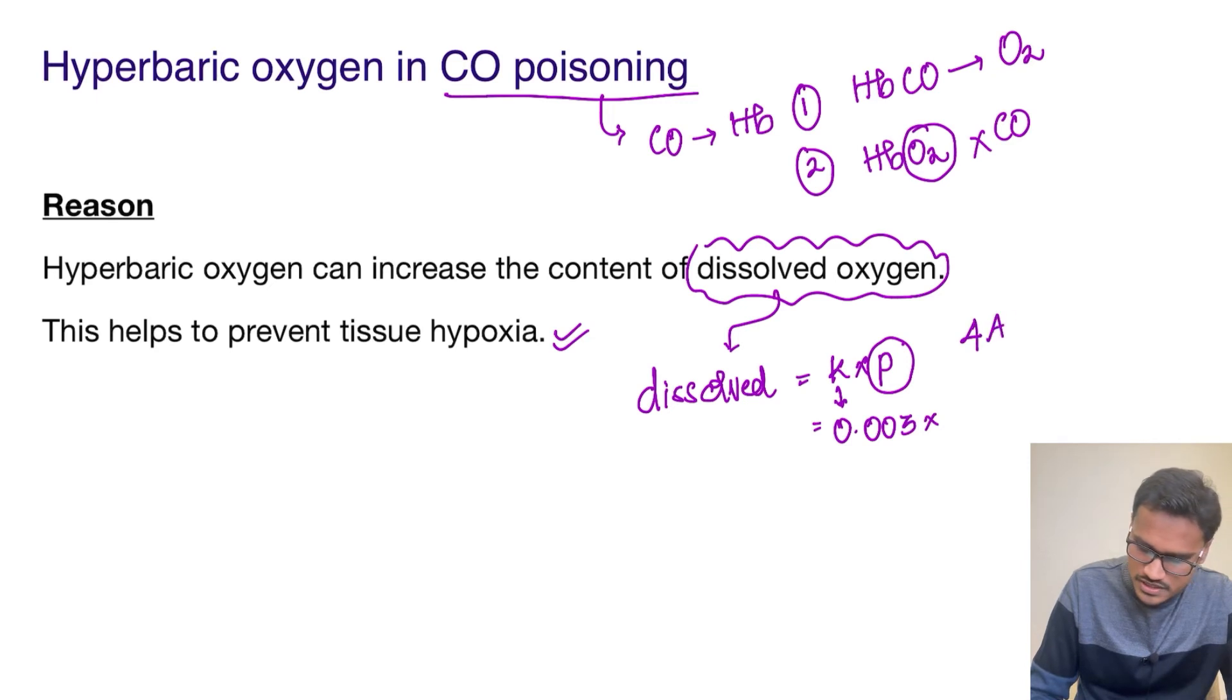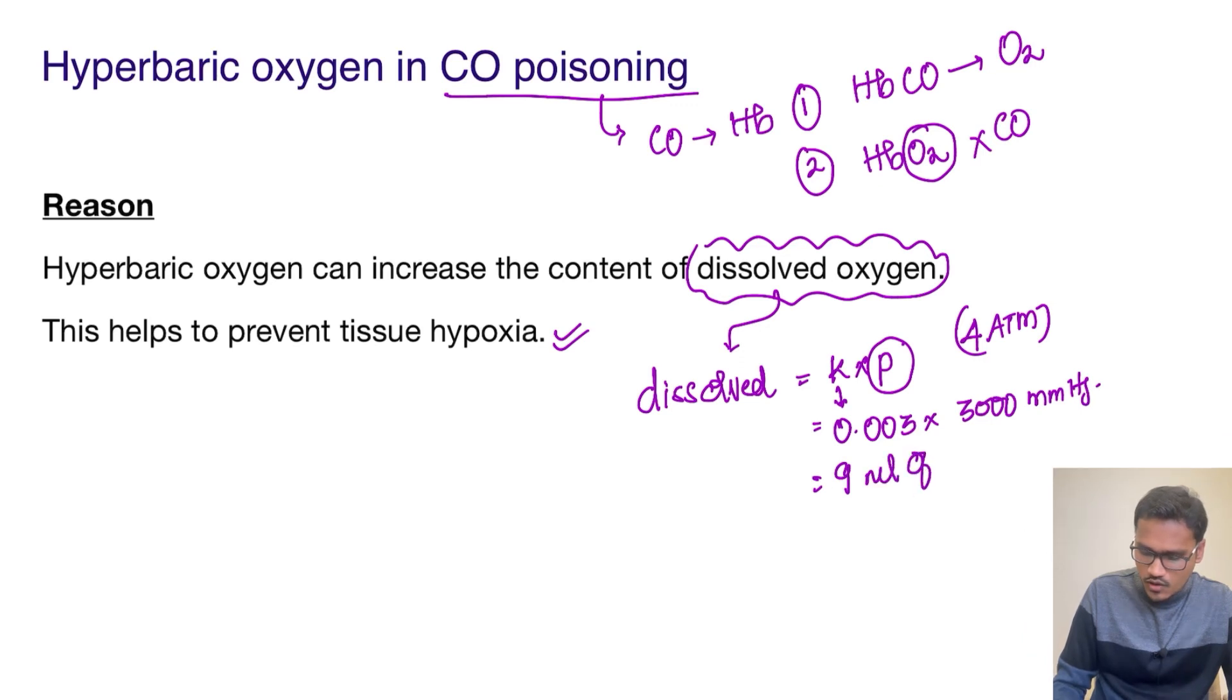We are going to use 4 atmospheres of hyperbaric oxygen, which is around 3000 mmHg. So now what it is going to do is around 9 ml will be in the dissolved form. This is very, very high.